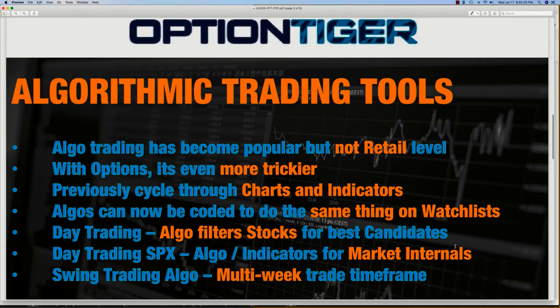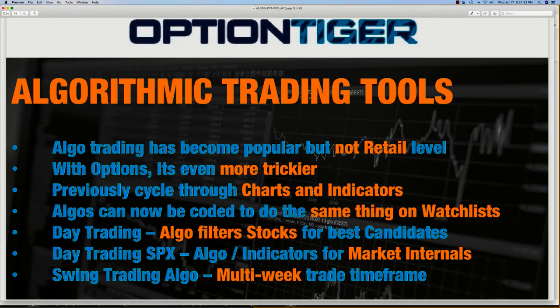Algorithmic trading tools at the retail level have not been widely available, and for good reason — most of these algos are being run by professional trading firms. The institutional traders and investors have adopted algo trading, but it's still pretty nascent at the retail trader level. With options it's a bit trickier because there are a lot of parameters, and at the retail level it's hard to come up with something unless you invest heavily into programming and even hardware — you need a lot of crunching power.